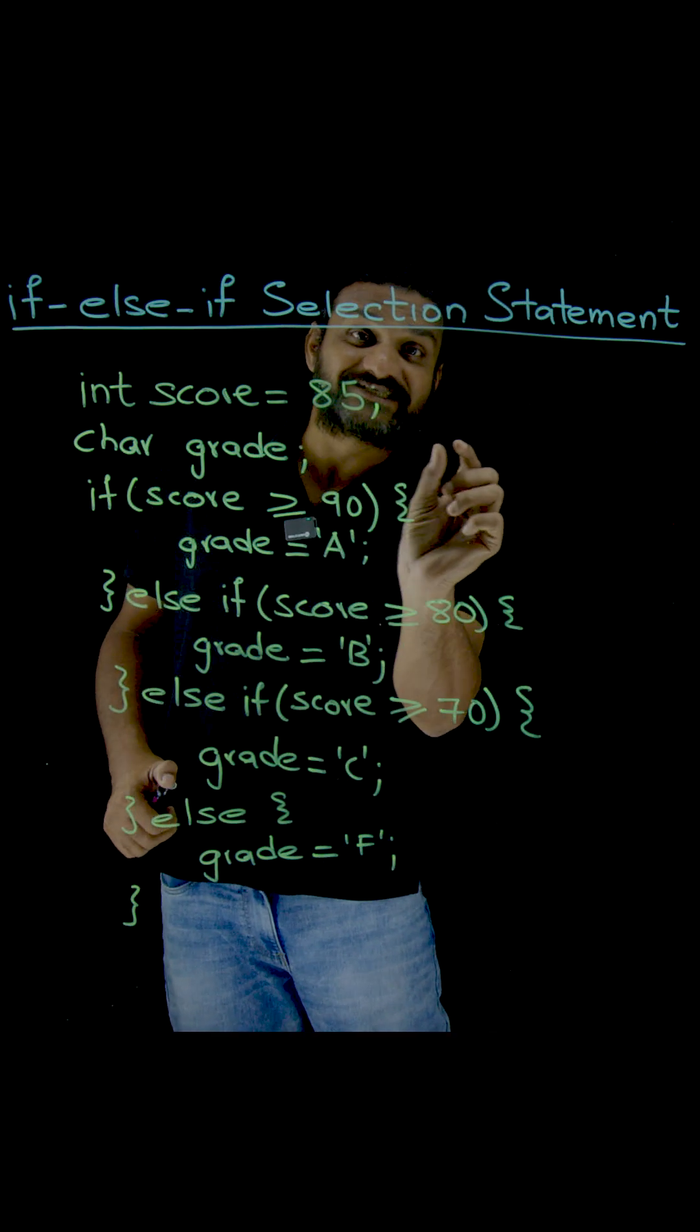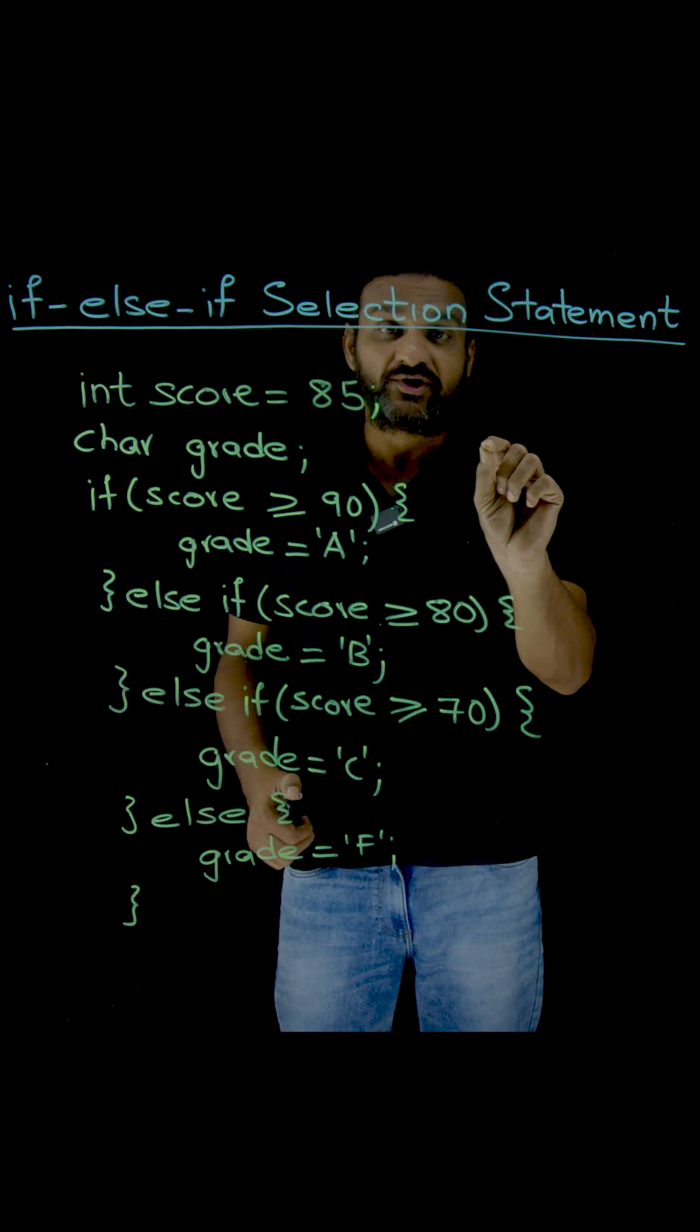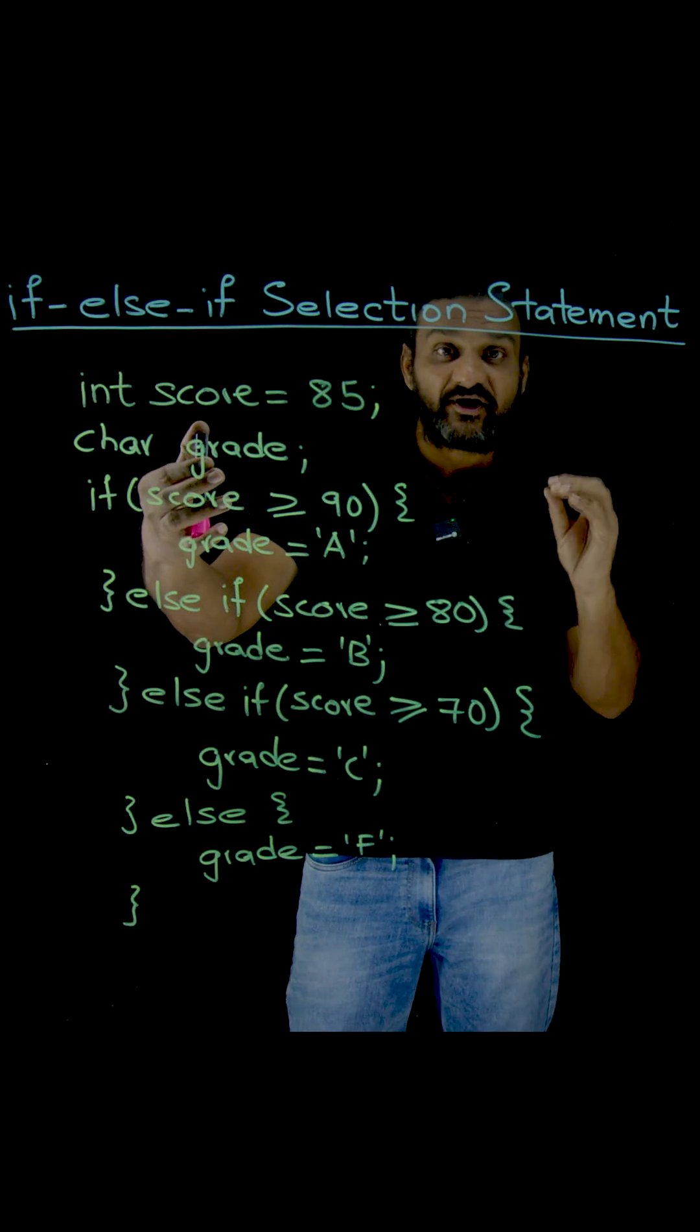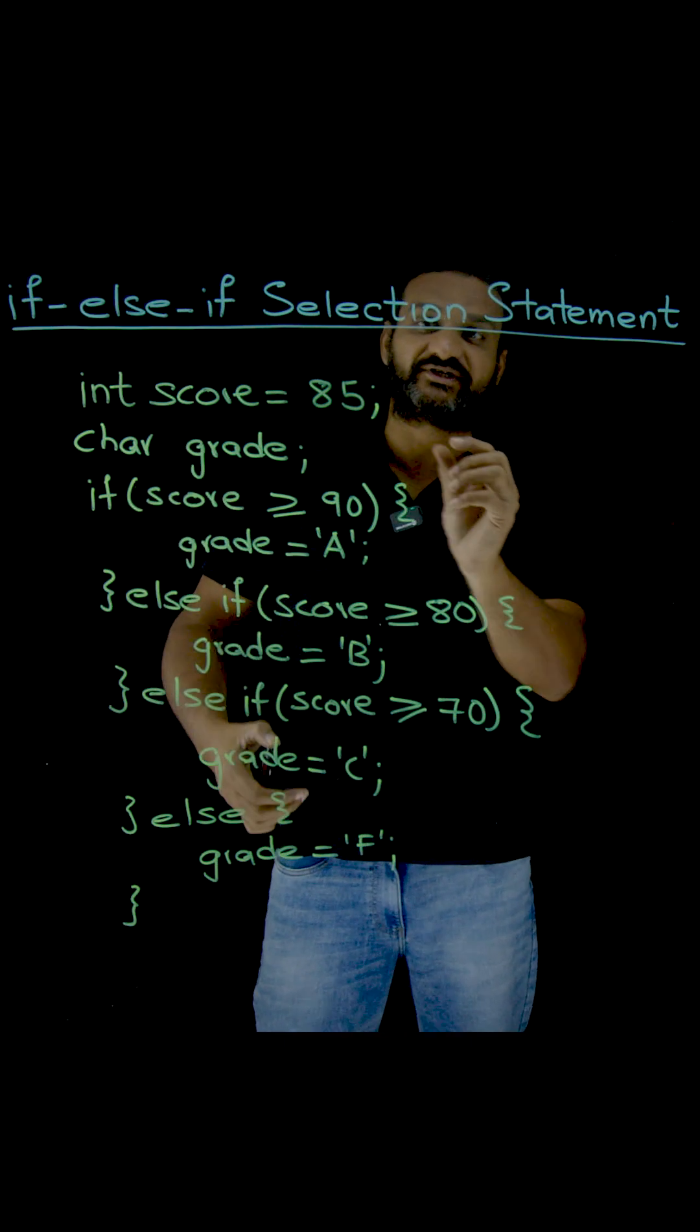If the marks of the student is 65, let's see that case also. How the chain of if-else statements will get executed can be easily understood if you consider the case of 65.